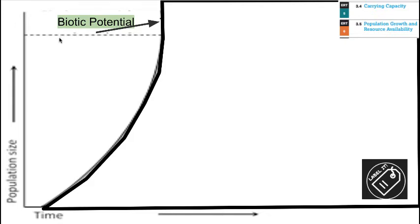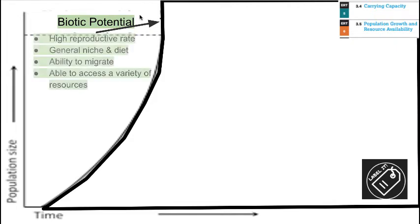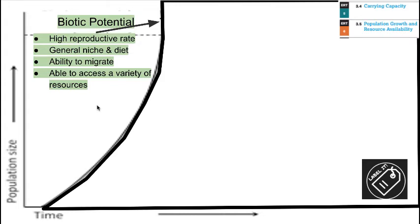Biotic potential results in rapid increase in population size — we see this line moving up exponentially. This happens in populations for four main reasons: the population has a high reproductive rate, a generalized niche or diet, the ability to migrate and access a variety of resources, and flexibility in lifestyle. Because of that, they're able to access and utilize all available resources, creating ideal conditions for surviving and reproducing. That's biotic potential.